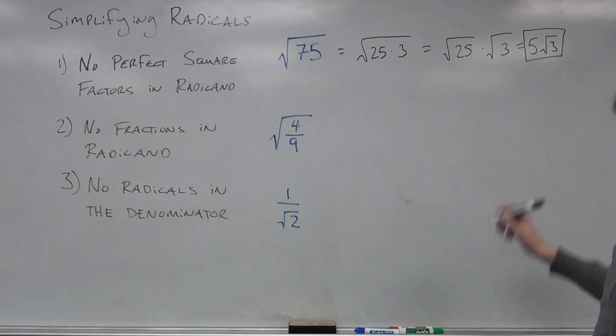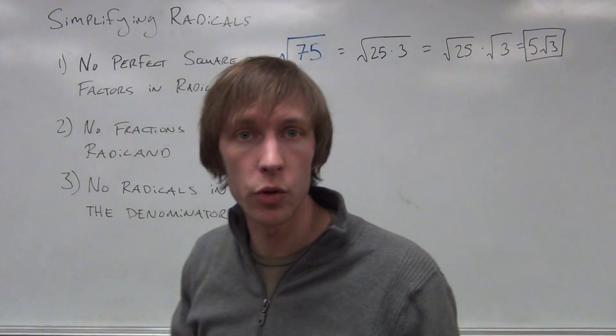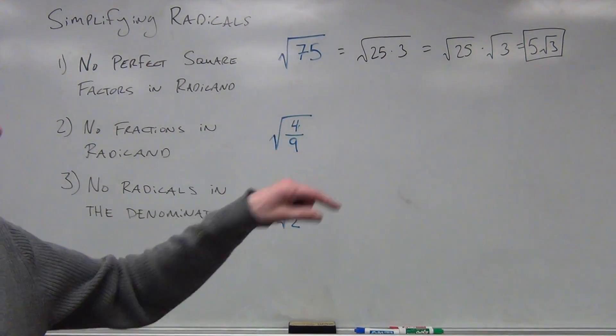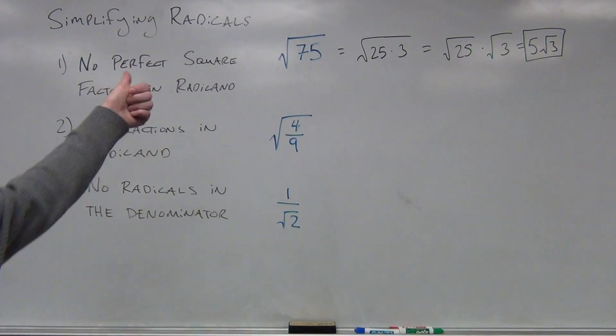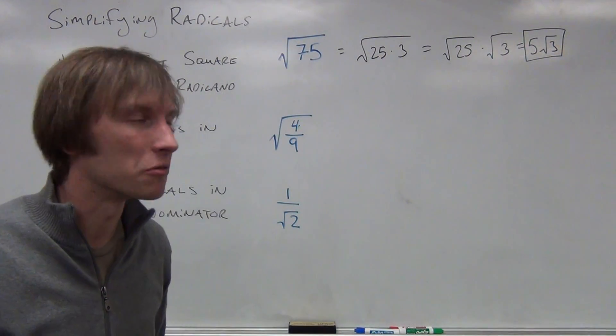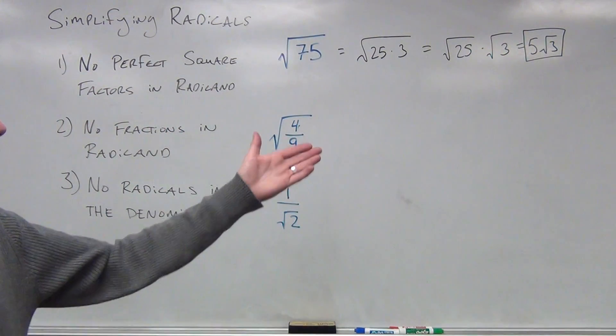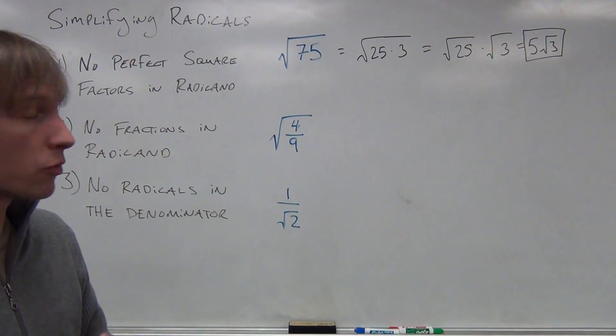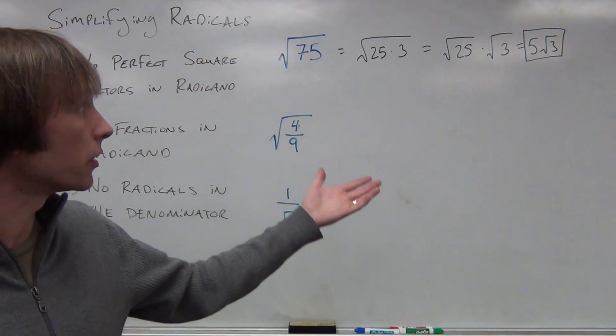So we have 5 times the square root of 3. Under the radical, there are no perfect square factors except for 1, obviously. So the square root of 1, we'll be doing that forever if we keep trying to take out a square root of 1. But 3, we can't take the square root of 3 to get any rational number. That's an irrational number.